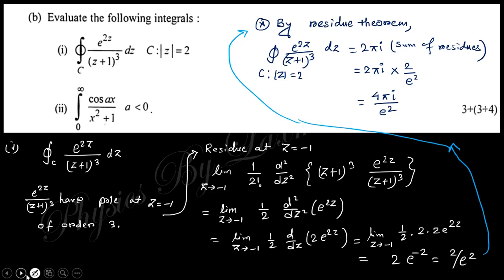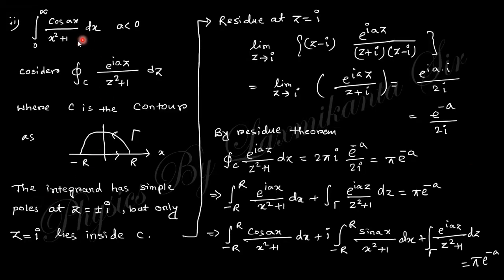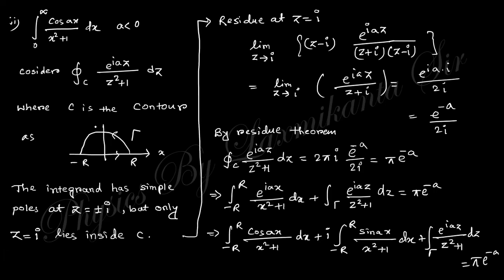For the next integration involving cosine, consider f(z) = e^(iaz)/(z²+1). The exponential e^(iaz) relates to cosine and sine. Using a contour along the x-axis closed in the upper half-plane, the poles are at z = +i and z = −i. Since z = −i lies outside the contour, only z = i is within. Finding the residue at z = i using the residue formula.